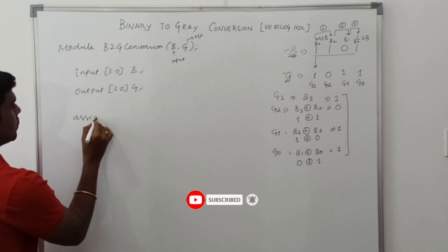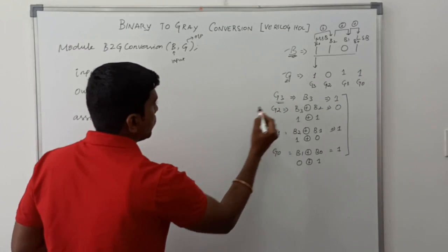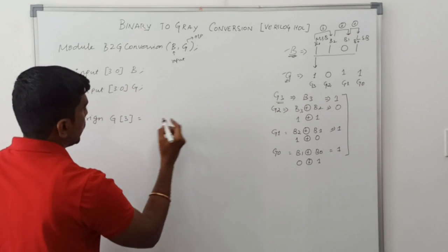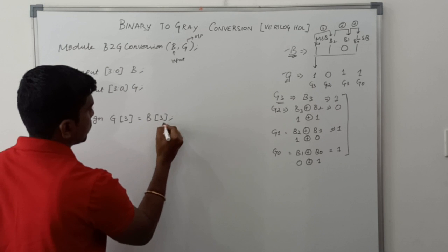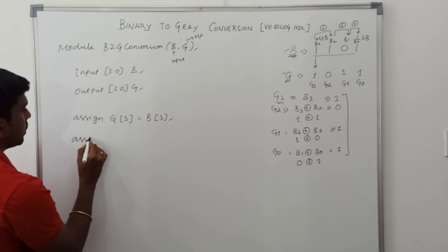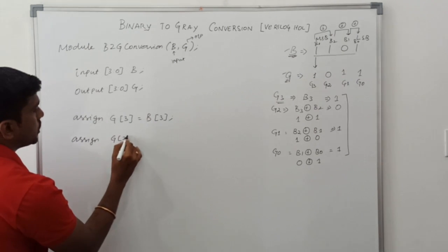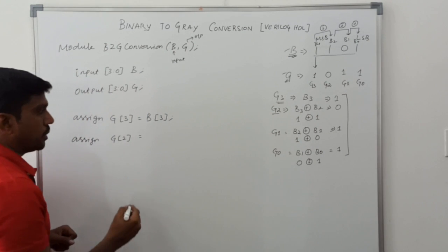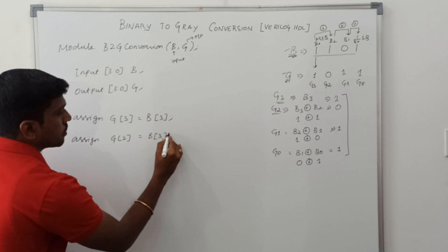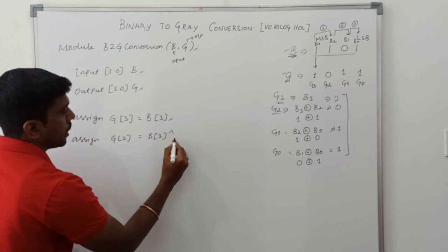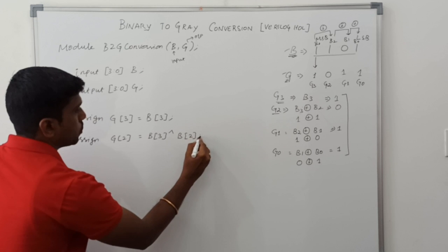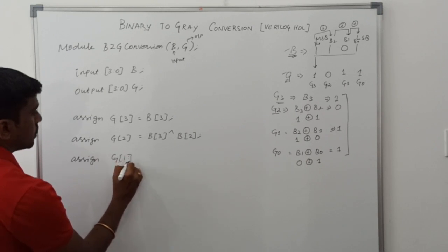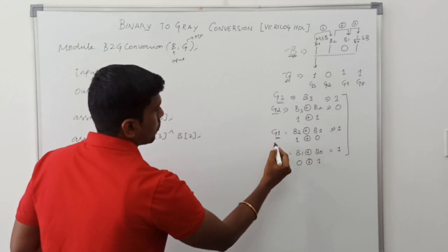Next, assign G3 value: assign G3 equal to B3. Then assign G2. To find G2 value, B3 XOR B2. So B3, this caret represents the XOR operation, B2.